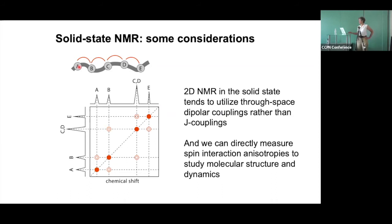In the two-dimensional plane you have diagonal signals where each signal correlates with itself. The interesting signals are the off-diagonal signals, which in this kind of experiment are between signals from carbons that are physically close in space. Carbon A is close to carbon B, and so the signal for carbon B is correlated with the signal for A. The intensity of that correlation signal is roughly proportional to 1 over R to the 6, where R is the internuclear distance. So the pattern of signals and their intensities tell you about the molecular structure in the extracellular matrix.